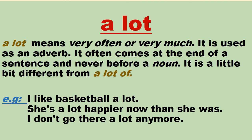Here I am going to explain 'a lot' used on its own. 'A lot' means very often or very much. It is used as an adverb — it often comes at the end of a sentence and never before a noun. It does not show the number of persons or things. For example: 'I like basketball a lot.' 'She is a lot happier now than she was.' 'I don't go there a lot anymore.'